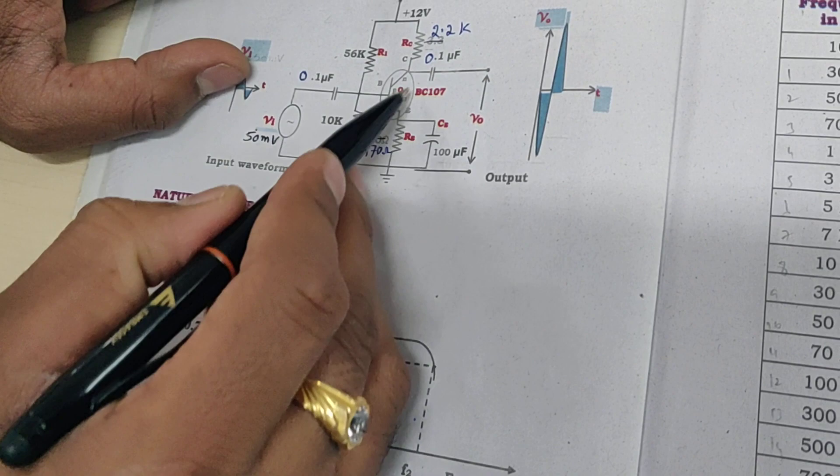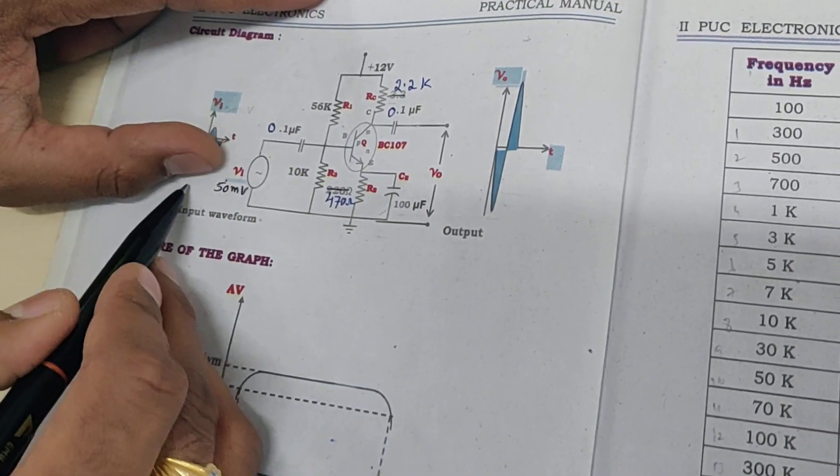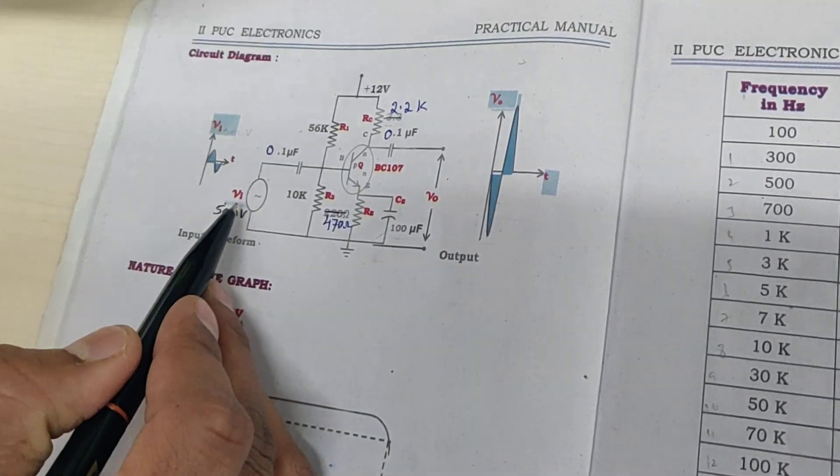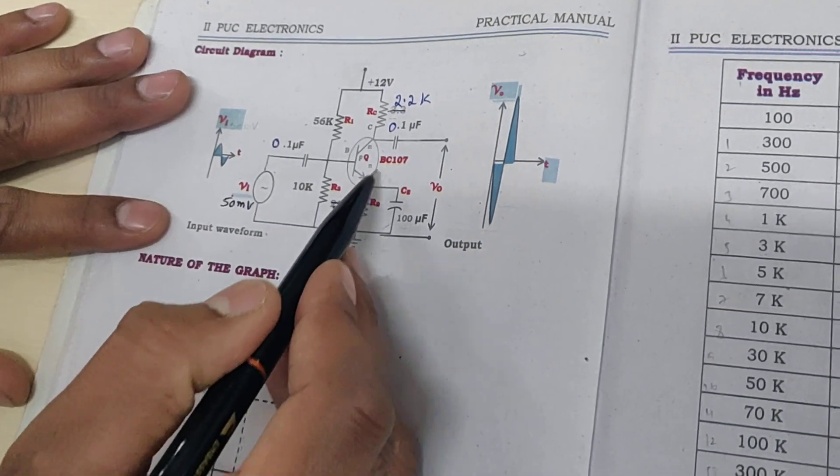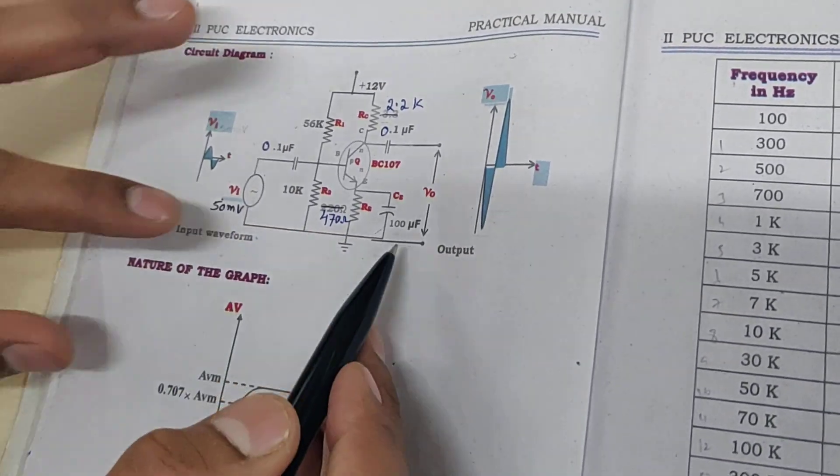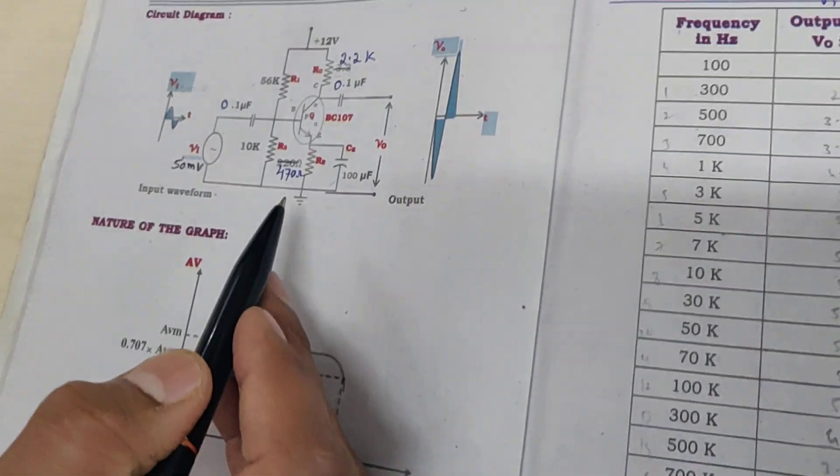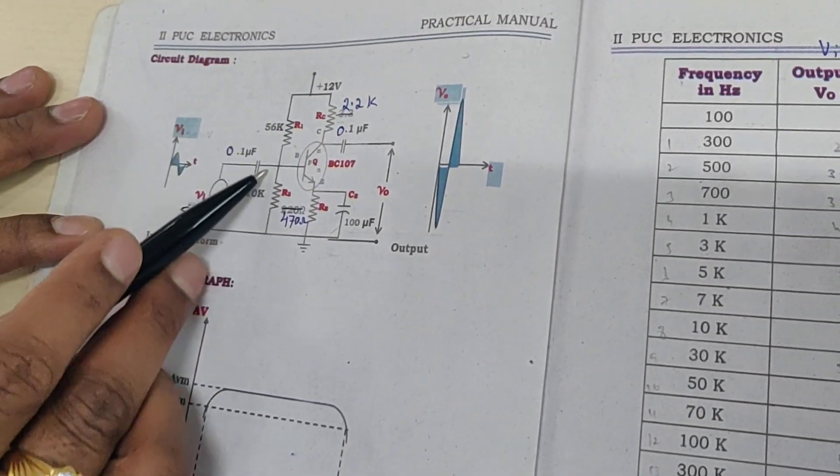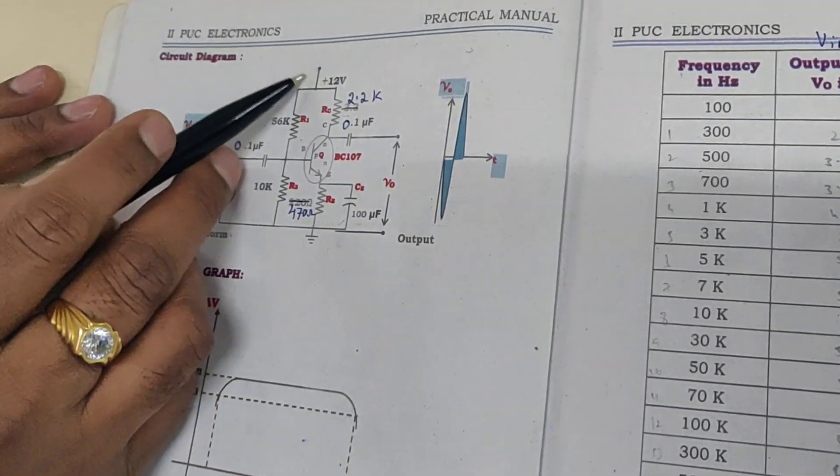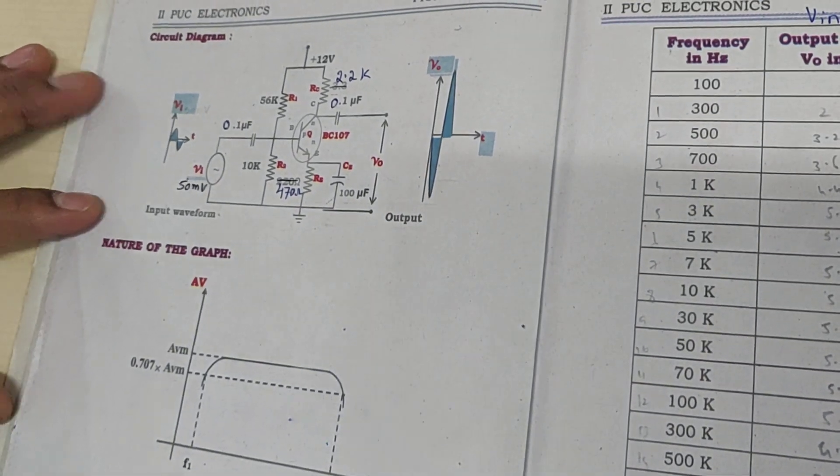We shall construct the circuit and then apply the input signal from the signal generator. The output will be taken across the collector end using the CRO. This is a voltage divider biasing using 12V.